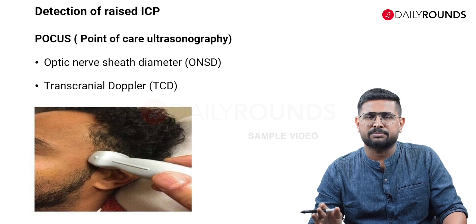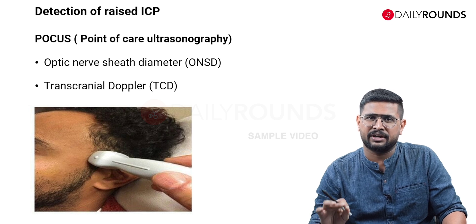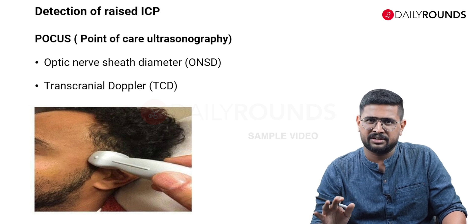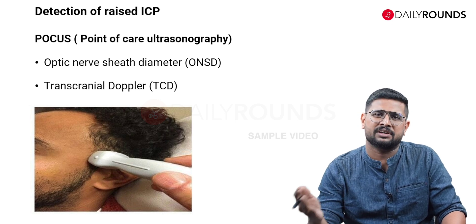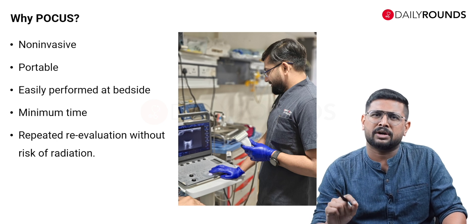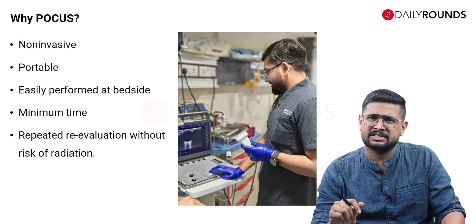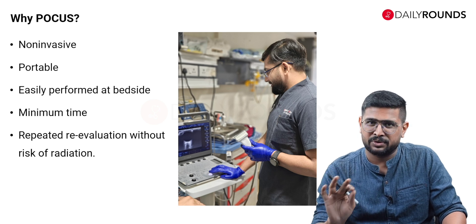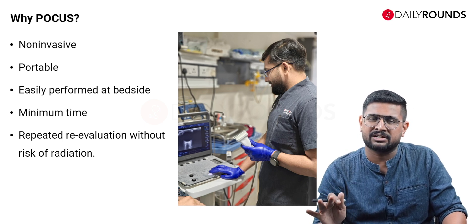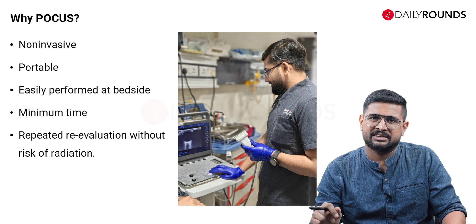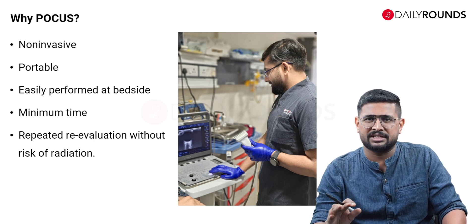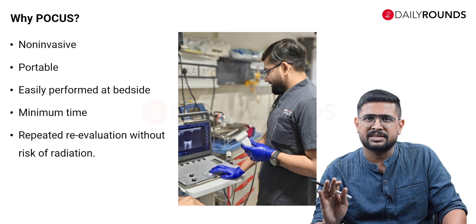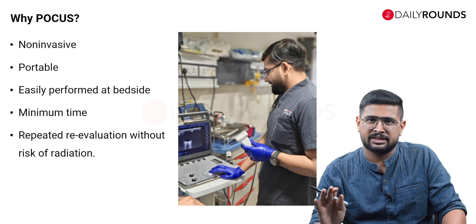There are two methods by which point-of-care ultrasound can aid in finding raised ICP. One is the optic nerve sheath diameter, which we will discuss in this session, and the other is transcranial Doppler, which has a different session. Point-of-care ultrasound is a non-invasive, ultra-easy method that can be used at the bedside. Since it is non-invasive, there is no problem repeating this imaging as many times as needed, which helps in reassessment of the patient, especially in the ICU.